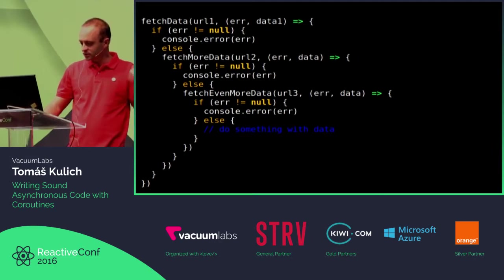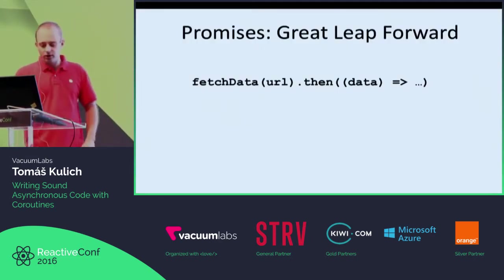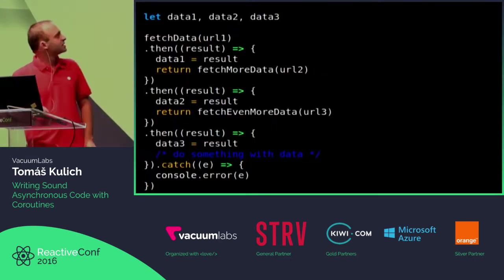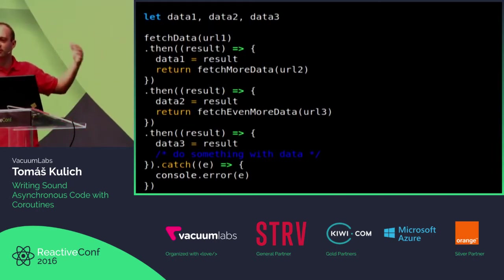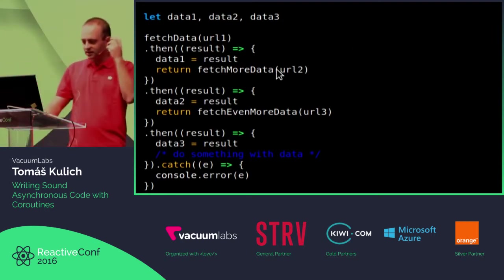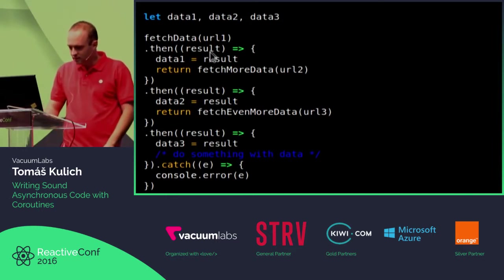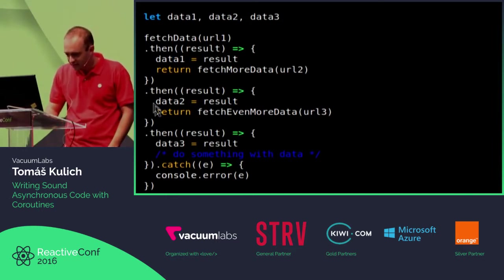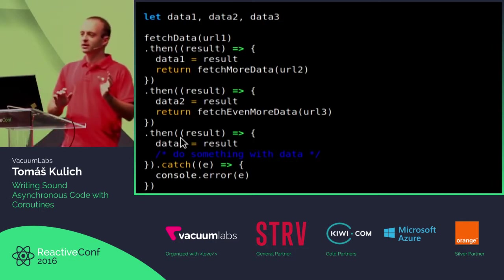Since callbacks were no good, then promises came, and promises were really great. The whole code looked much nicer with promises. This is the same code you saw before, functionally. But still, it's not ideal. There is a lot of syntactic clutter — a lot of parentheses, a lot of lambda functions everywhere.